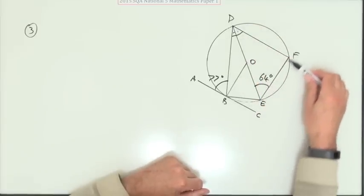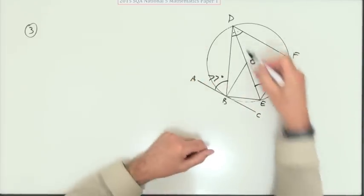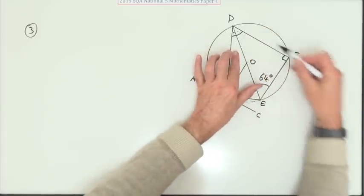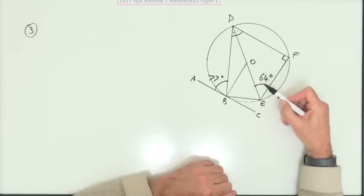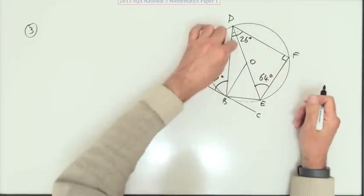Well straight away without looking at the rest, part of that angle comes from this triangle. It's right angled. That's 64. So that would leave 26. So that part's 26. I just need this bit.